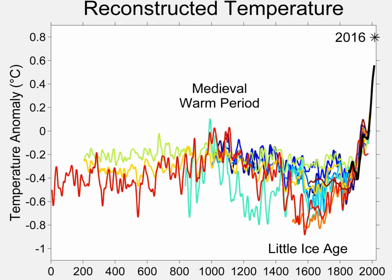The distribution of proxy records, just like the instrumental record, is not at all uniform, with more records in the Northern Hemisphere. In science, it is sometimes necessary to study a variable which cannot be measured directly. This can be done by proxy methods, in which a variable which correlates with the variable of interest is measured, and then used to infer the value of the variable of interest. Proxy methods are of particular use in the study of the past climate, beyond times when direct measurements of temperatures are available.